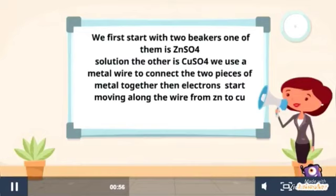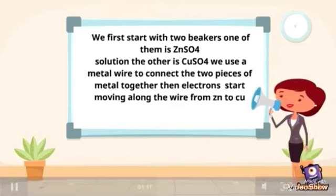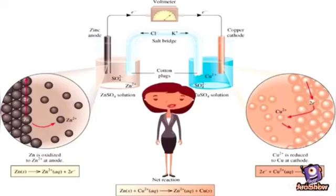We start with two beakers: one contains zinc sulfate solution and the other contains copper sulfate solution. We use a metal wire to connect the two pieces of metal, then electrons start moving along the wire from zinc to copper. Zn atoms are at the edge of the metal while Zn²⁺ ions are in the solution. The other beaker contains Cu²⁺ ions dissolved in copper sulfate solution, with Cu atoms at the edge of the Cu metal.